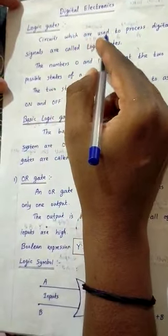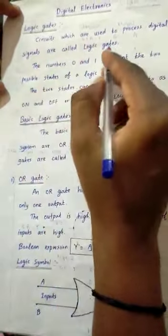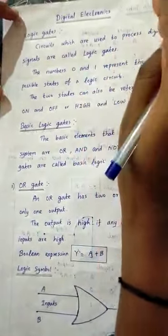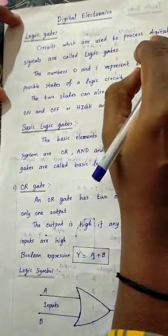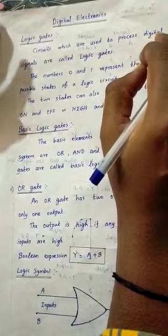Circuits which are used to process digital signals are called logic gates. Logic gates le digital signals matti me pain budu.